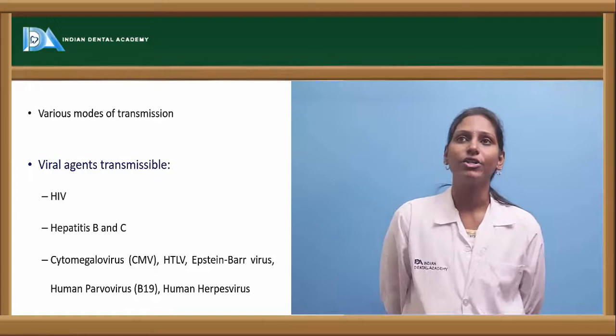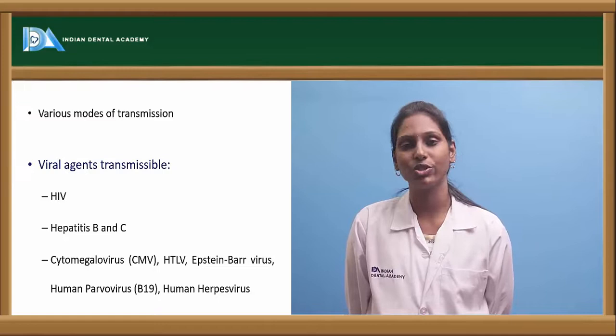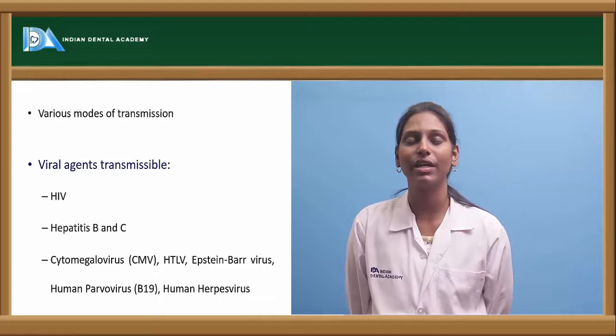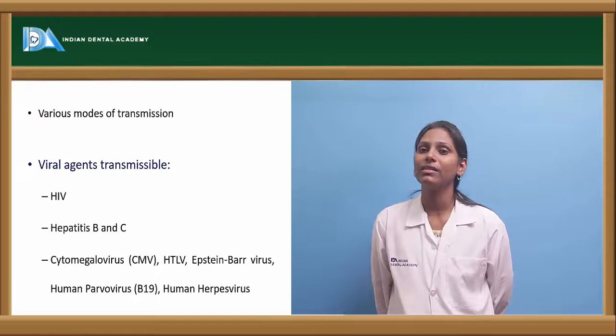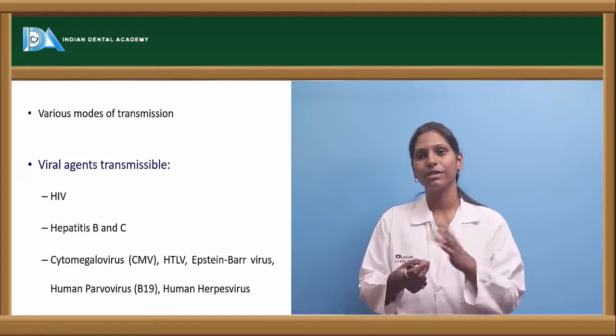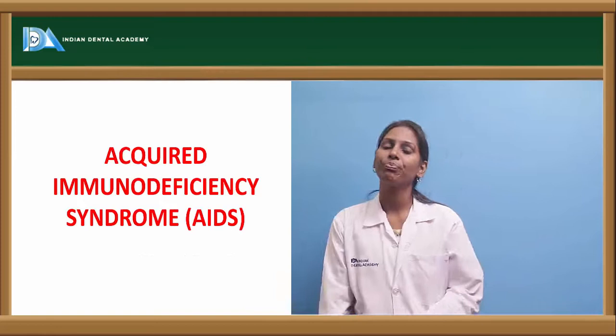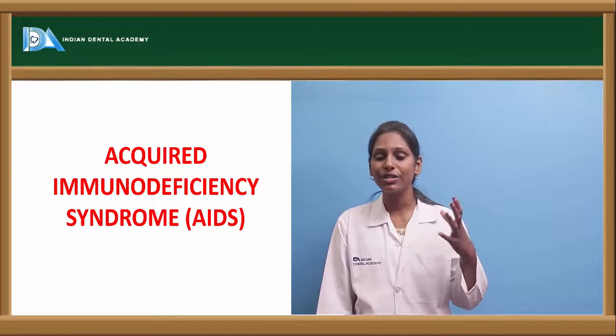HSV-1 can spread through direct contact, and HSV-2 can be transmitted through unsafe sexual practices. The herpes simplex virus produces vesicular, fluid-filled lesions — it is an epitheliotropic virus. When these vesicles break down, the fluid or direct contact with the lesion can lead to transmission of the herpes simplex or human herpes virus.